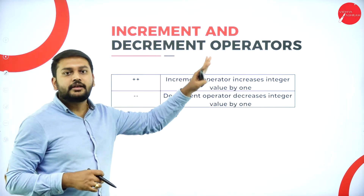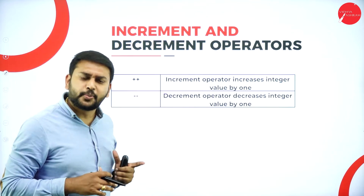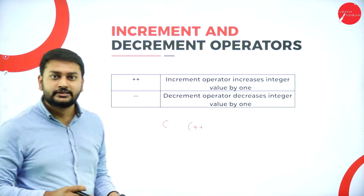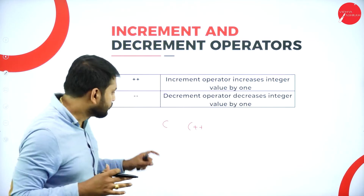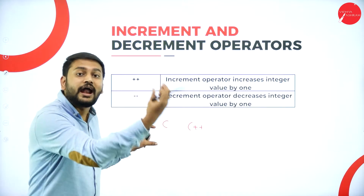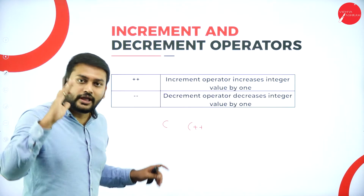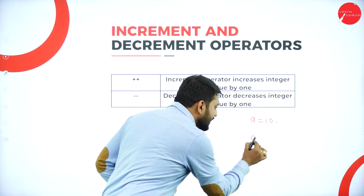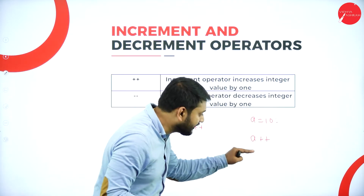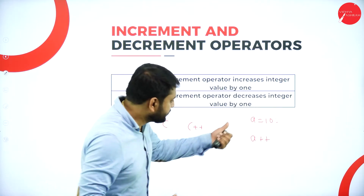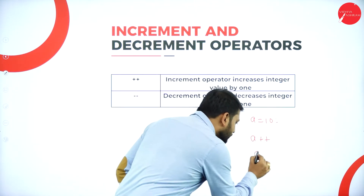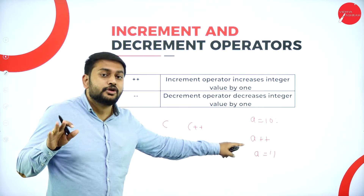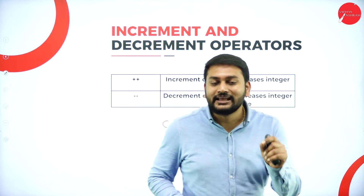Moving forward to the next operator: increment and decrement. You would have studied C and C++ — plus plus means you have added something extra. The C# language has added extra features over C. Remember: if a = 10 and I write a++, you are incrementing a by 1, so a becomes 11. You are adding 1 to the variable. For increment, there are two types: pre-increment and post-increment.